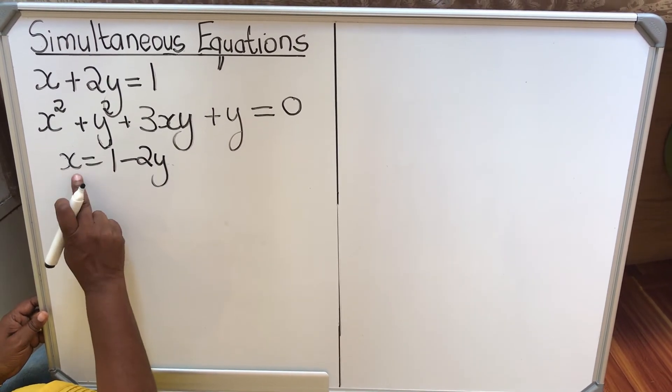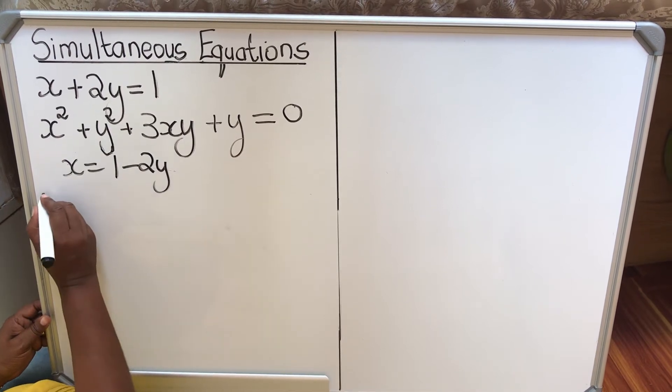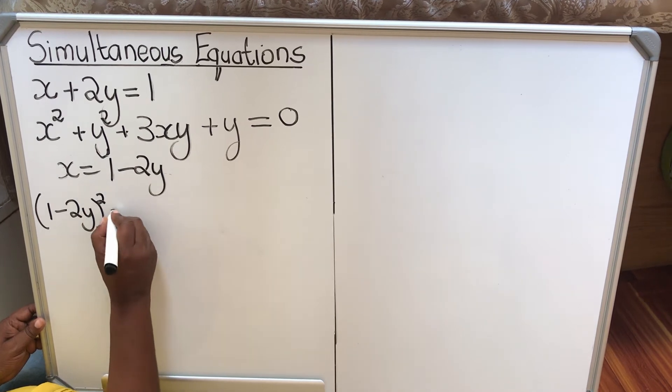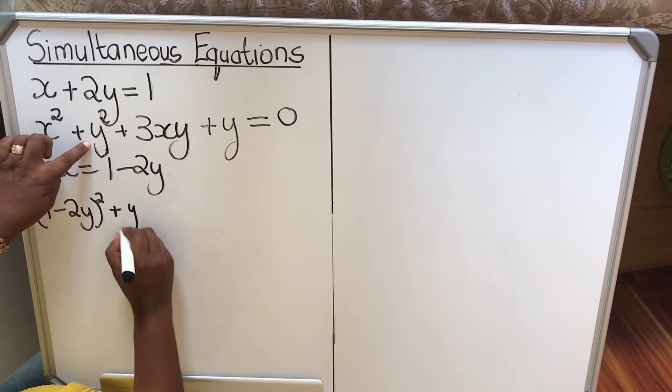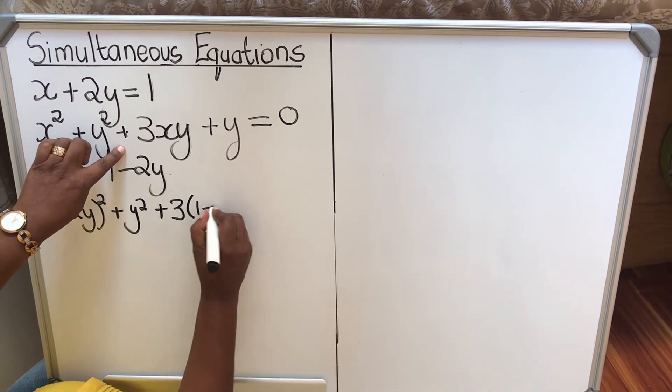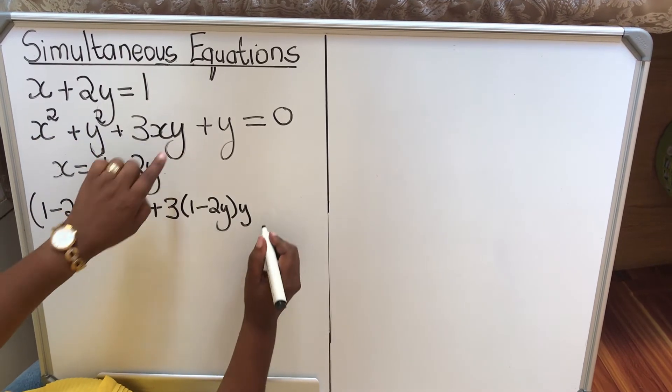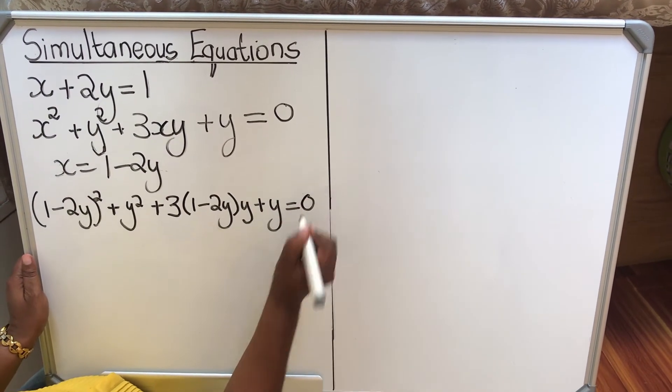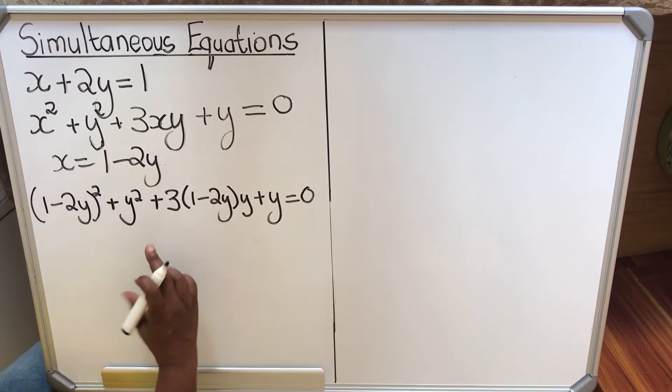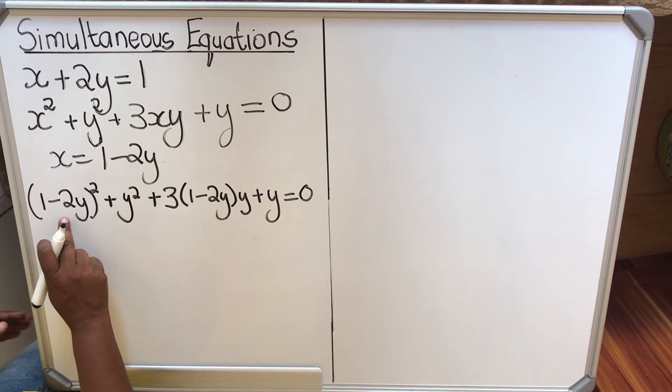So we're going to substitute for x. Wherever it's x we're going to write 1 minus 2y. So I'm going to have 1 minus 2y squared, plus y squared, plus 3 into 1 minus 2y times y, plus y equals 0. Right, now we're going to do the square binomial. If you're going to square binomial, look at our videos, you'll find one.